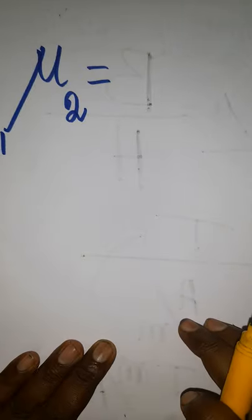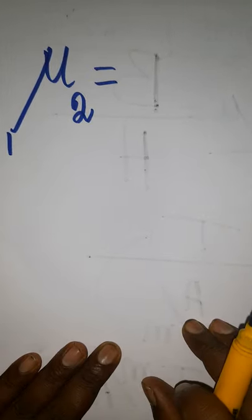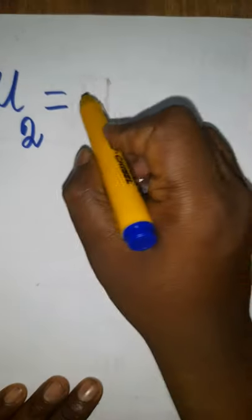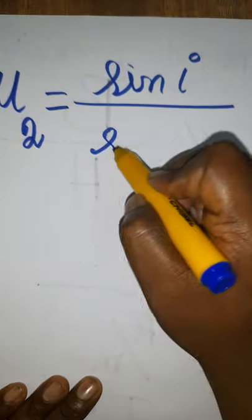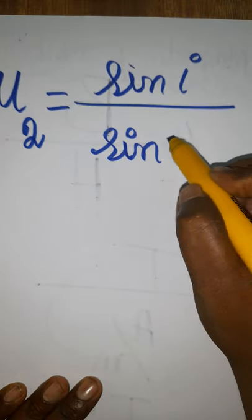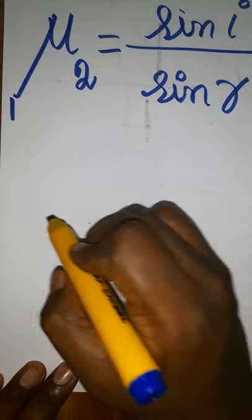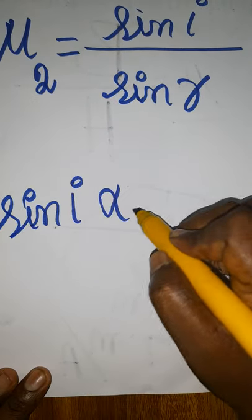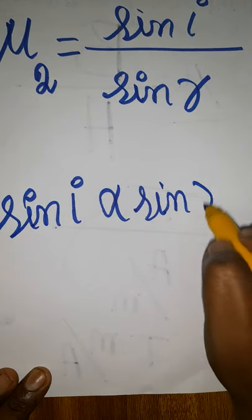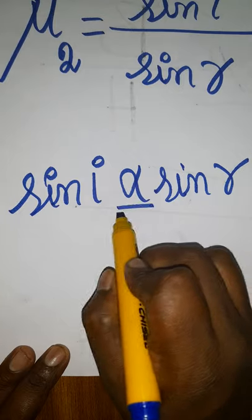Hello students, today we are going to learn Snell's law for Class 10 Physics. Snell's law is the ratio of sine of the angle of incidence to sine of the angle of refraction. According to the second law of refraction, sine of the angle of incidence is directly proportional to sine of the angle of refraction.